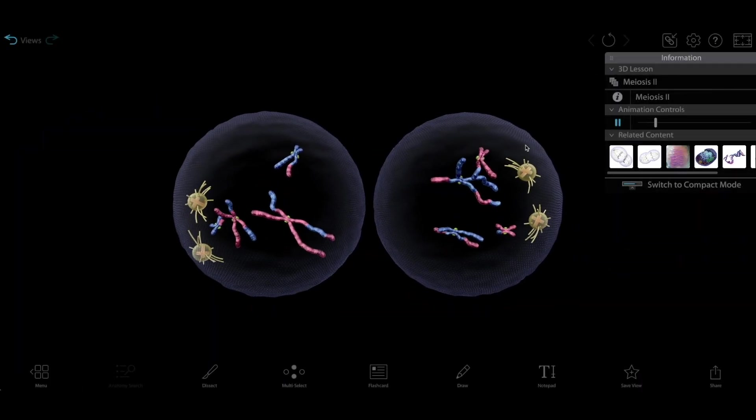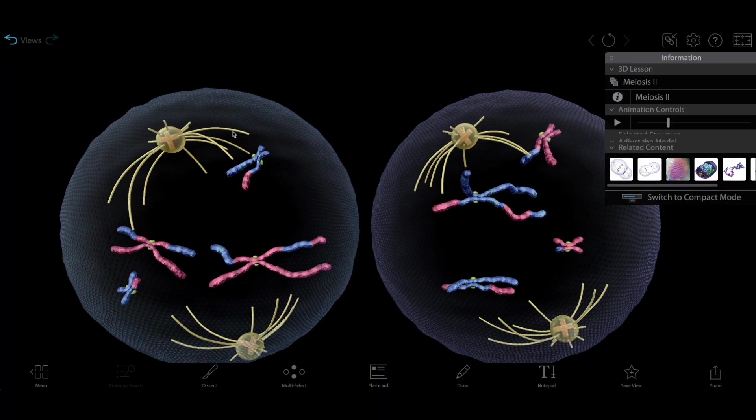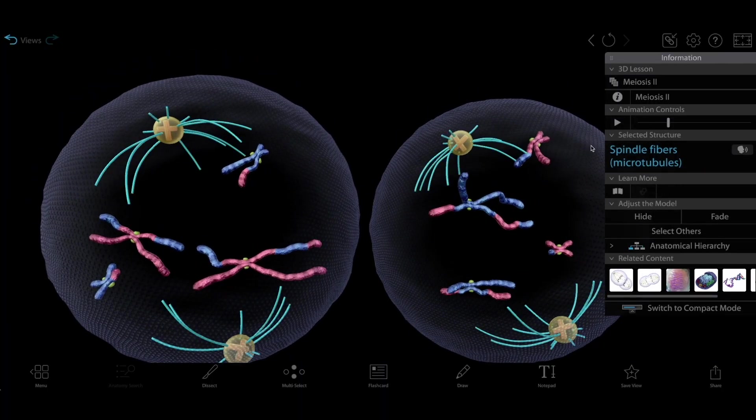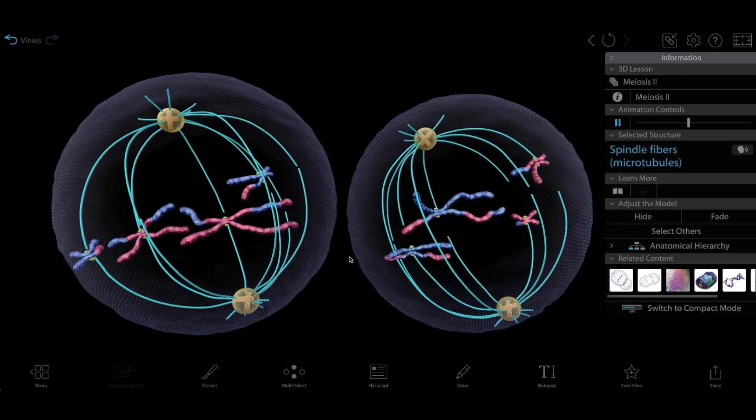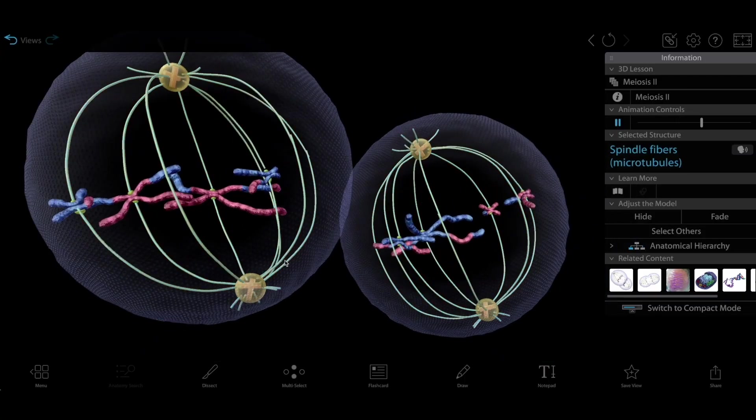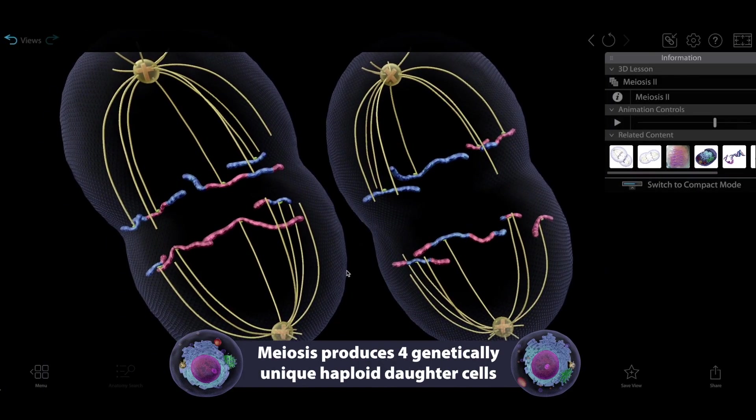That brings us to meiosis two, where each of the product cells of meiosis one will divide. But meiosis two doesn't start with replication. Instead, the spindle fibers form and pull apart the sister chromatids as the cell divides.